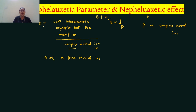Because B is inversely proportional to beta, B is inversely proportional to the complex metal ion, and therefore beta is directly proportional to the complex metal ion.